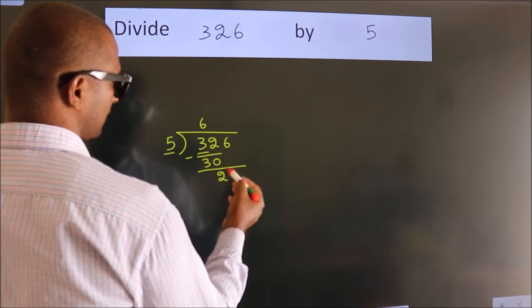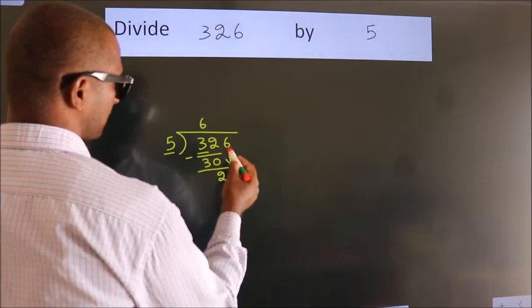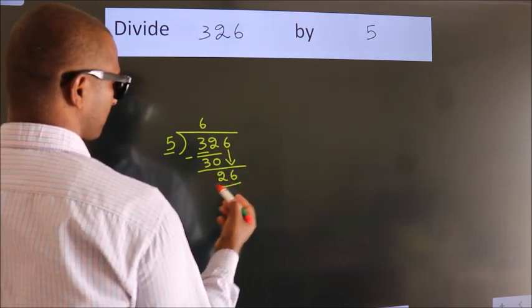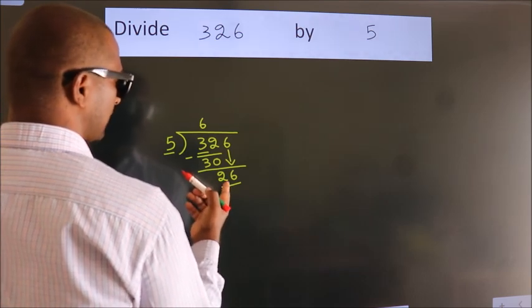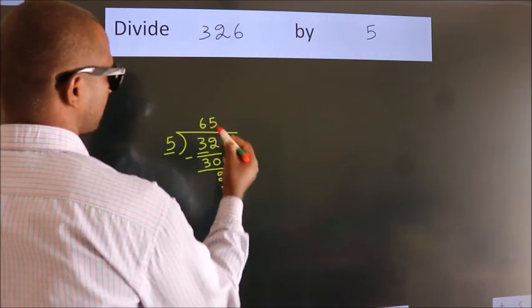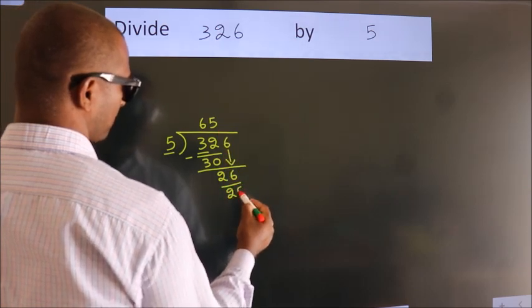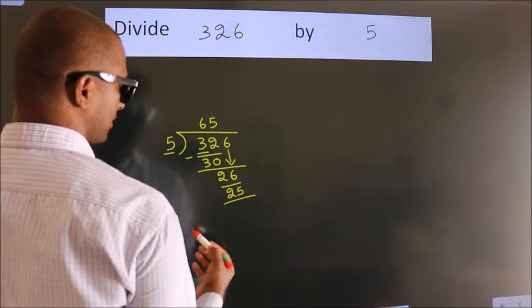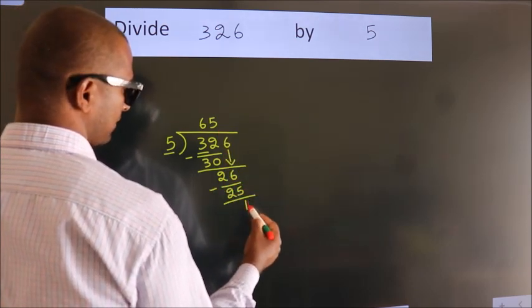After this, bring down the beside number. So 6 down, making 26. A number close to 26 in the 5 table is 5 times 5, which is 25. Now we subtract. We get 1.